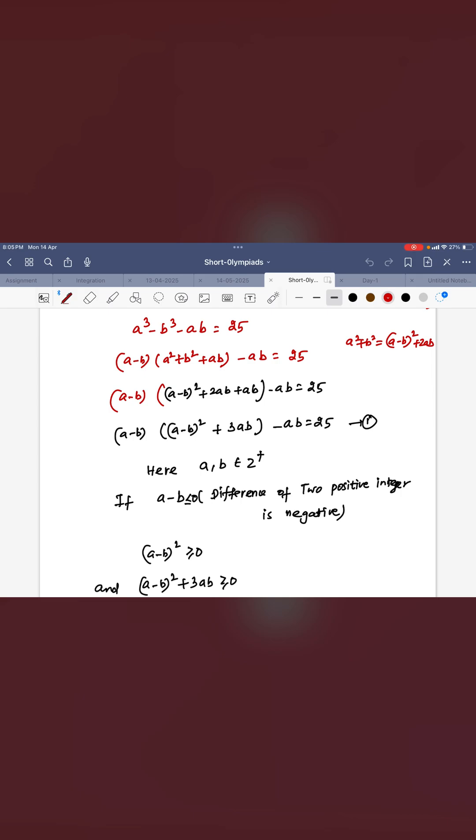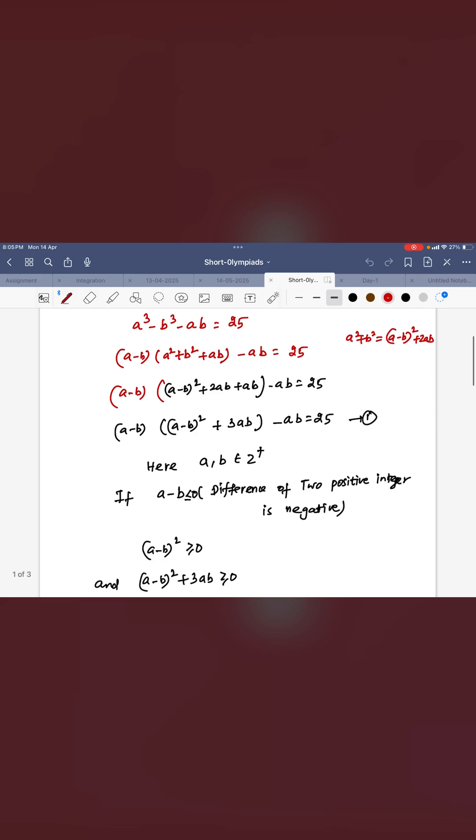Here A, B are positive. Suppose A - B is less than 0. What are the possibilities?